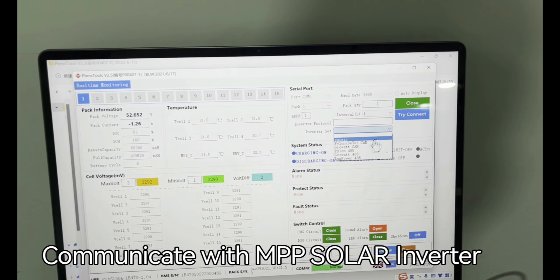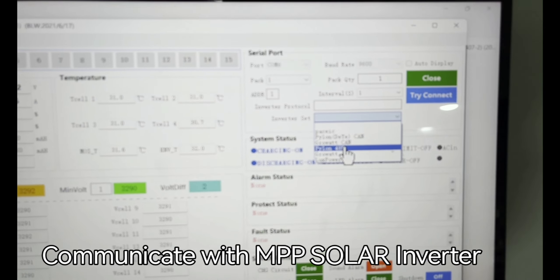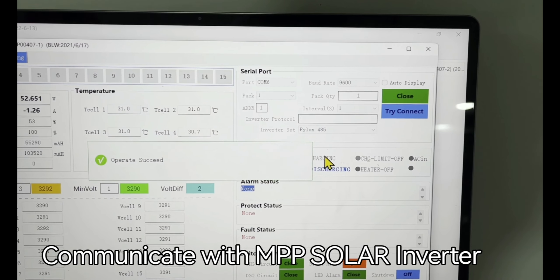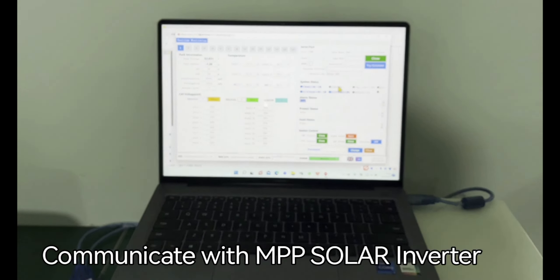Here after the communication, you will select PYL 485. As we said, it's by default PYL 485 in the battery BMS.